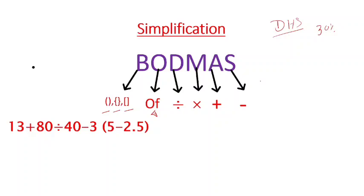If we apply this rule, for example, the question is 13 plus 80 divided by 40. For simplification, we have to follow this BODMAS rule.